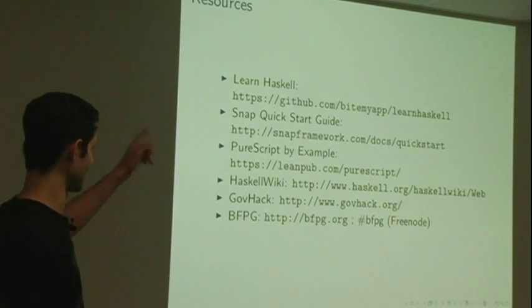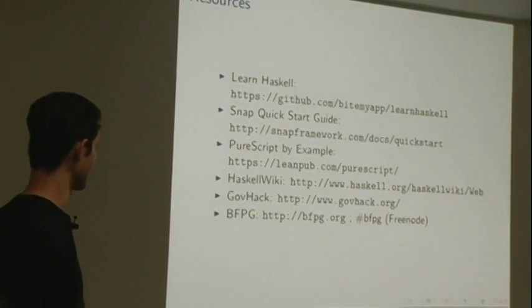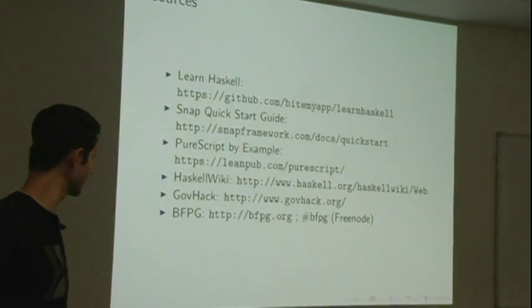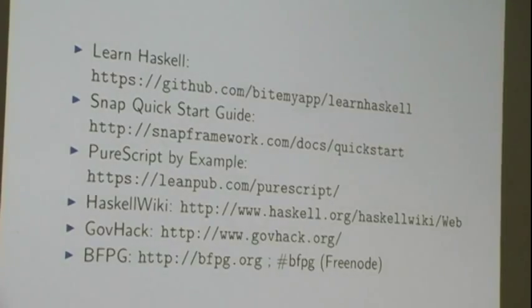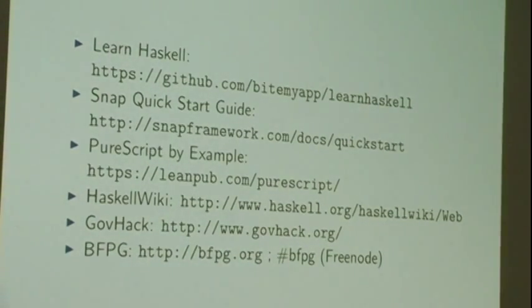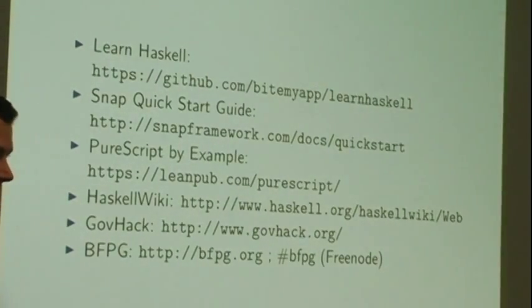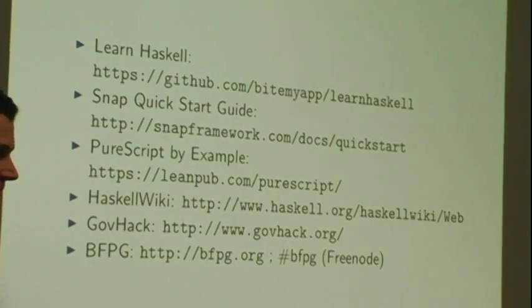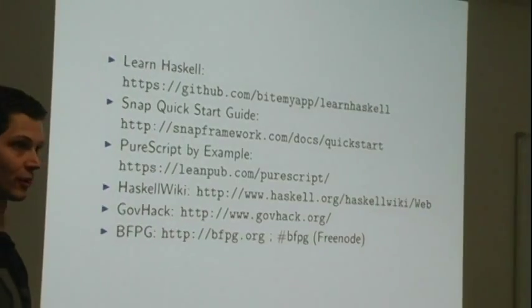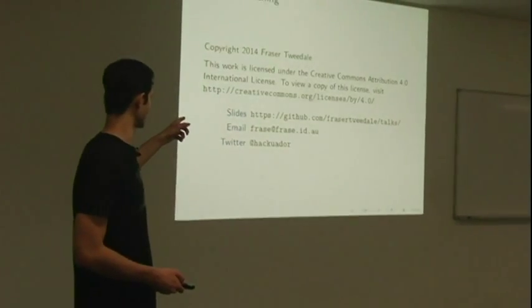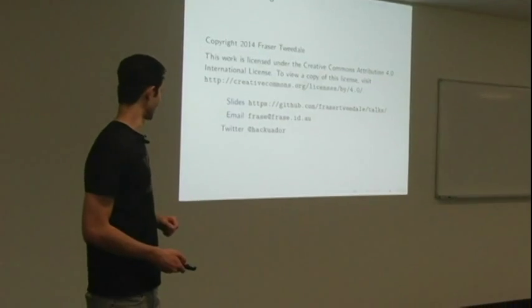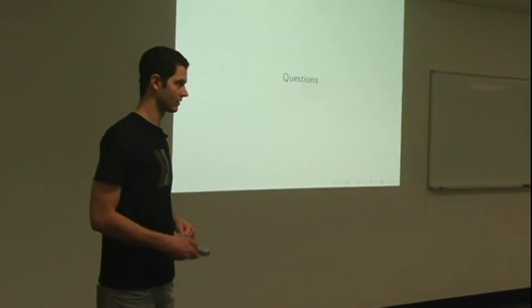Here are some Haskell resources. If you want to learn Haskell, that's a learning path I highly recommend. There's a snap quick start guide. PureScript by example is a PureScript book. There's the Haskell wiki for all things Haskell. GovHack lives at govhack.org. And BFPG is the Brisbane Functional Programming Group. We meet monthly. We're on meetup. That's the URL to our meetup page. It just redirects you there. We're on Freenode at BFPG. Come and chat. We're happy to have as many people as are interested involved. Thank you for listening. That's linked to my slides, which are creative commons attribution 4.0 and my email and my Twitter handle. Are there any questions?